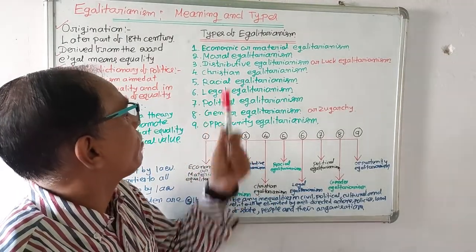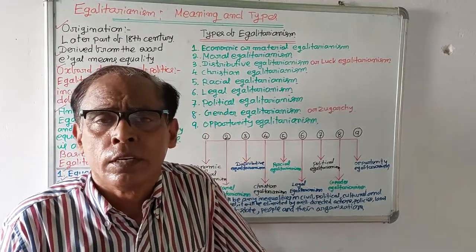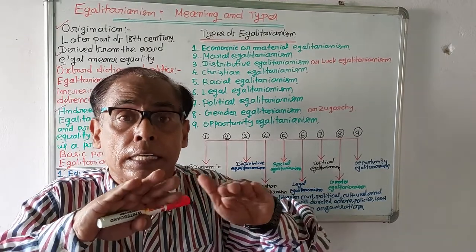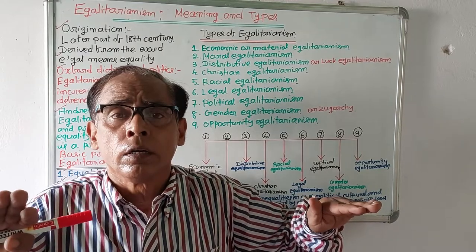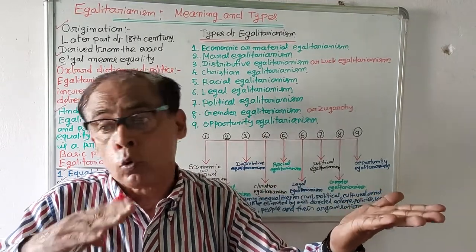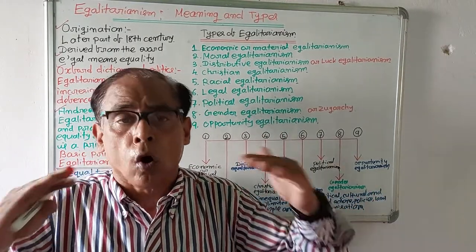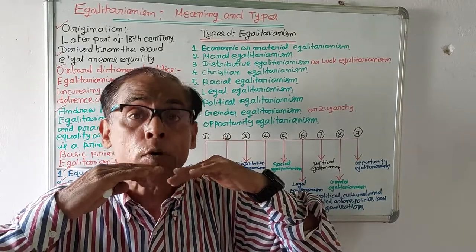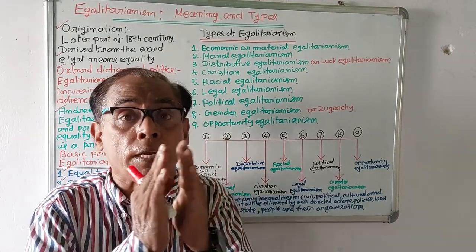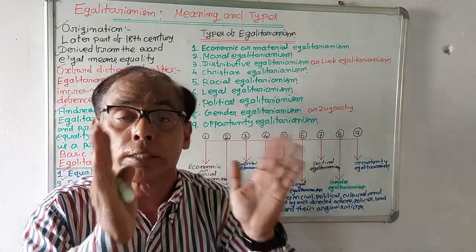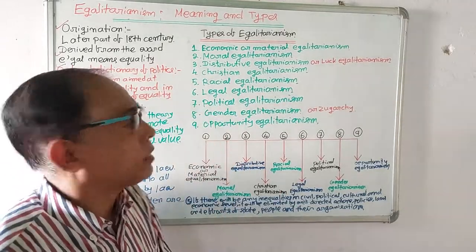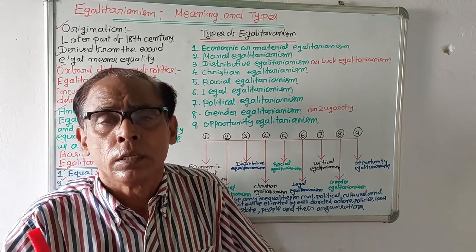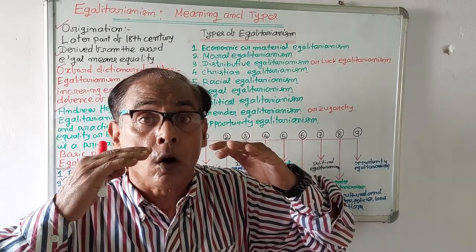Number five: racial egalitarianism. Racial egalitarianism means all races are equal — no race is superior, no race is inferior. Among races there must not be any discrimination.